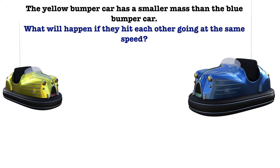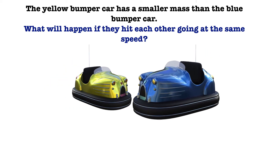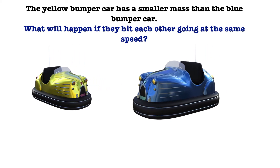Here, the yellow bumper car has a smaller mass than the blue bumper car. What will happen if they hit each other going at the same speed? As you can see, it will cause the blue bumper car to stop and the yellow bumper car will move backwards.